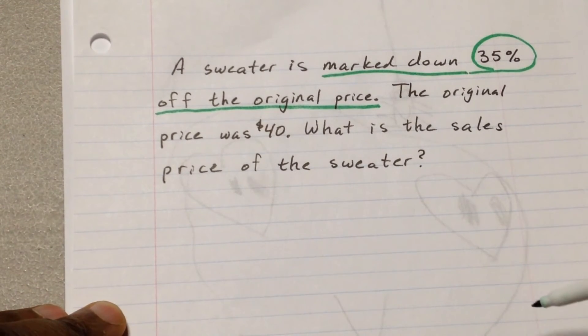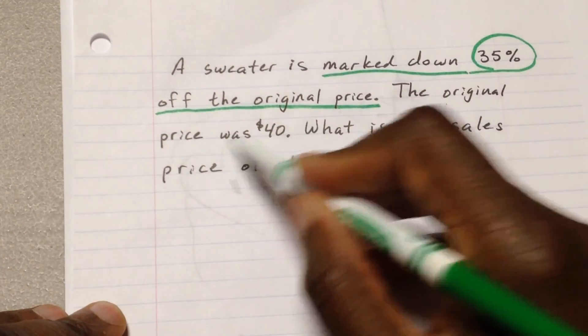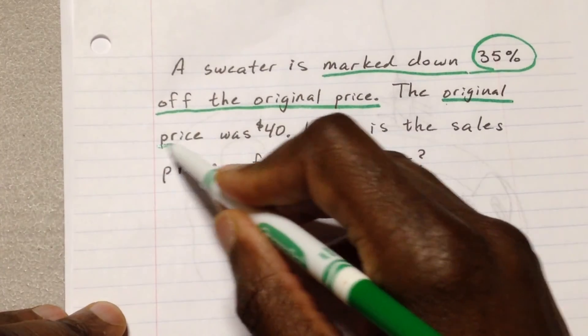It's going to be 35% off the original price. Okay. So what is the original price? It says it right here. The original price was $40. So we need that information. Original price, $40.